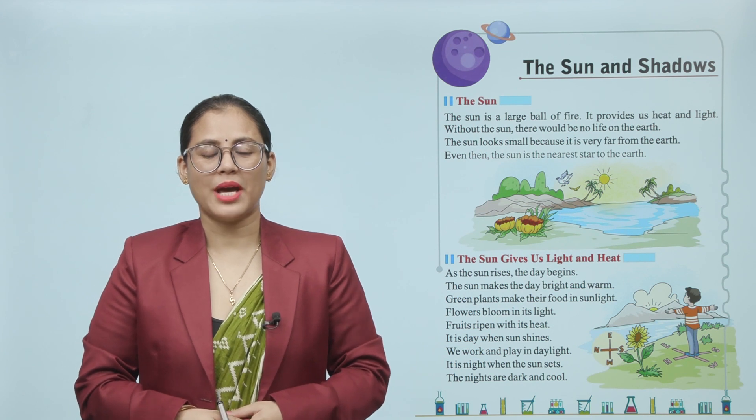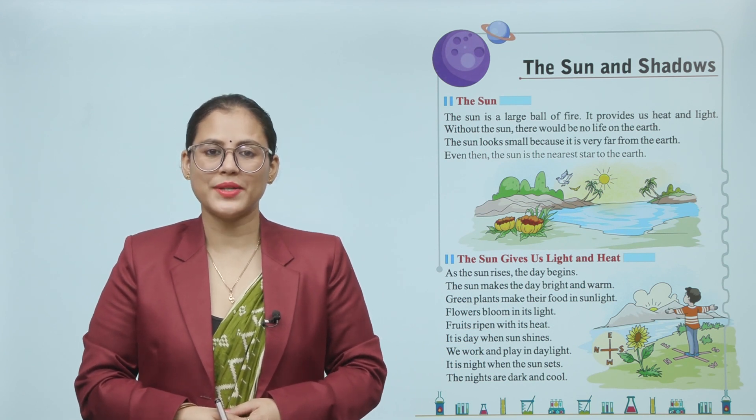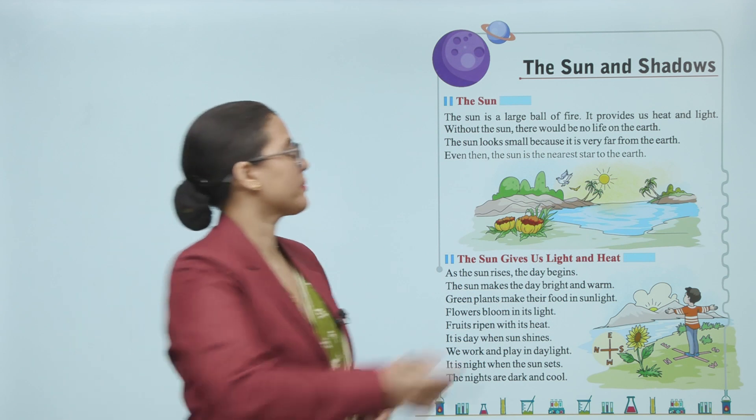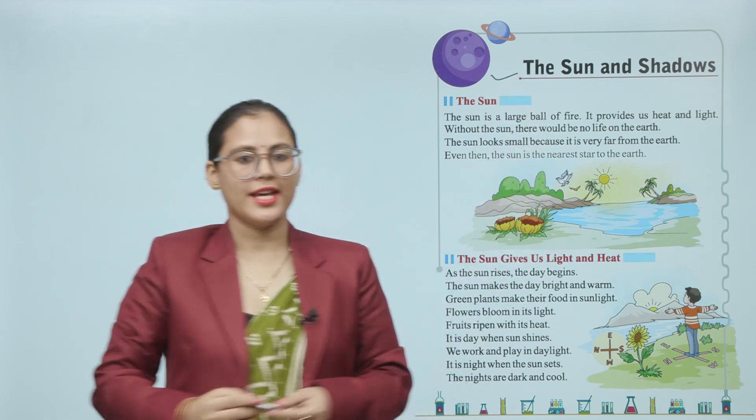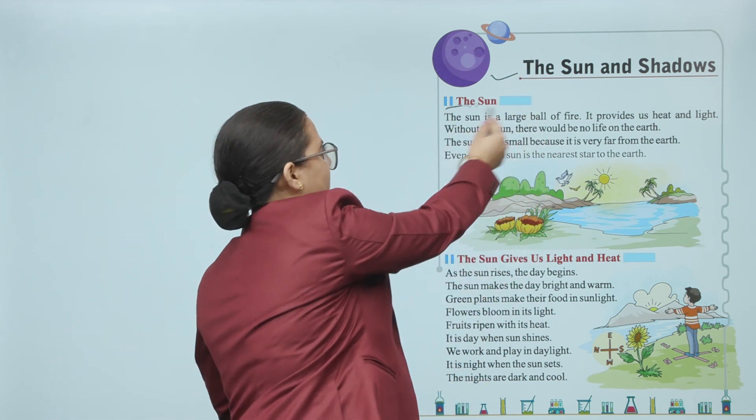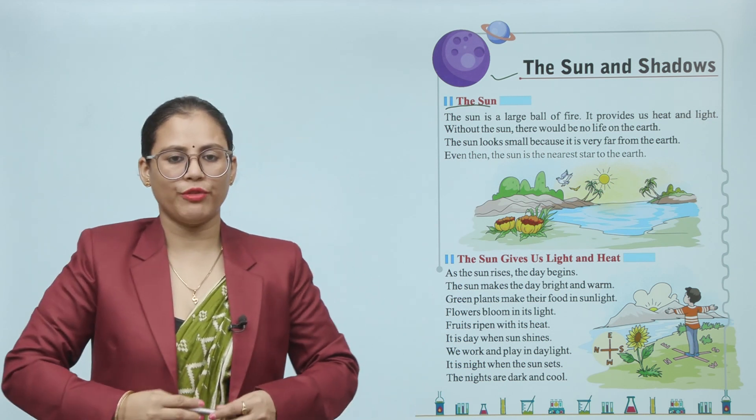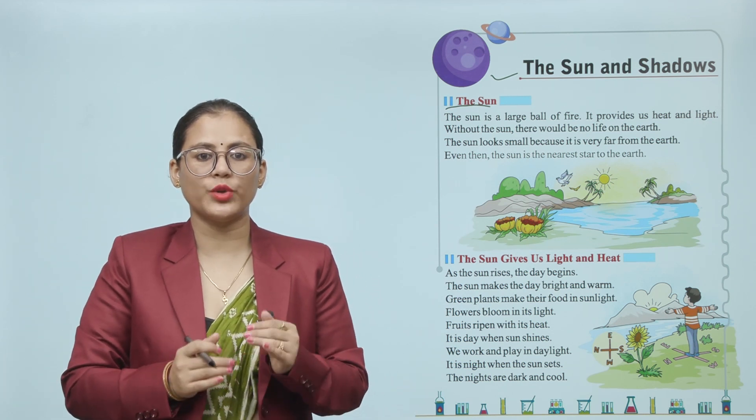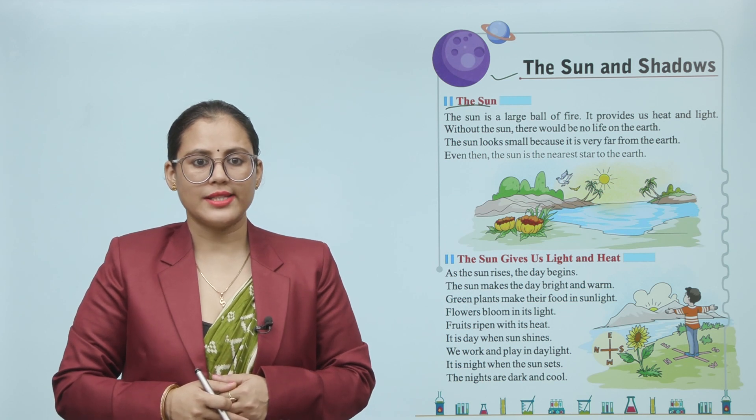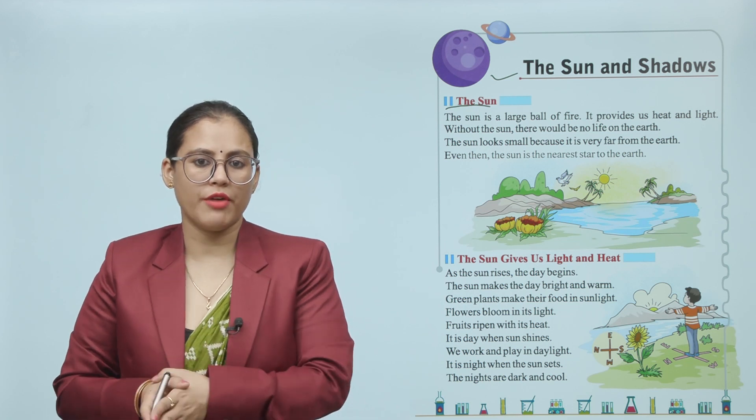Hello children, how are you all? I'm sure you all are doing good. Let's start today's chapter: The Sun and Shadows. The Sun is a large ball of fire. It provides us heat and light. Without the Sun, there would be no life on the earth.